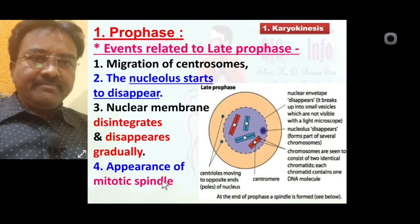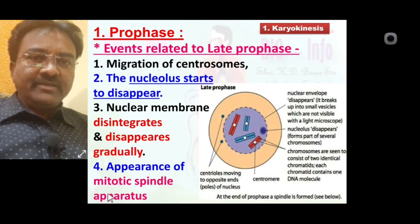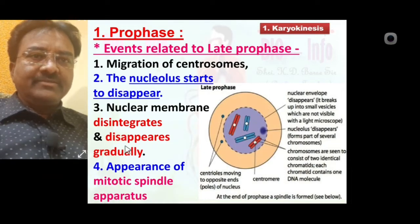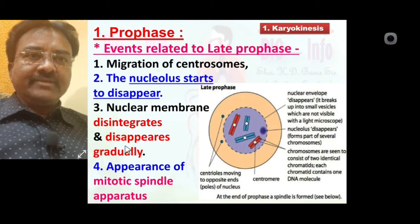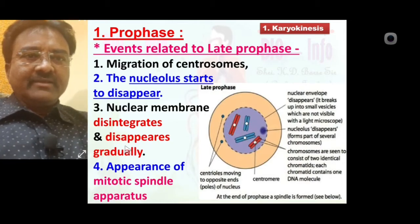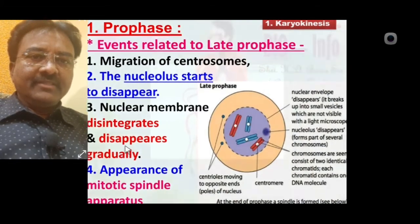In late prophase, the appearance of the mitotic spindle apparatus occurs. The two centrioles migrate from one another to form the spindle apparatus. All four events of late prophase are noted. Up to this we have discussed prophase as one of the sub-phases of karyokinesis, covering early prophase events and late prophase events.